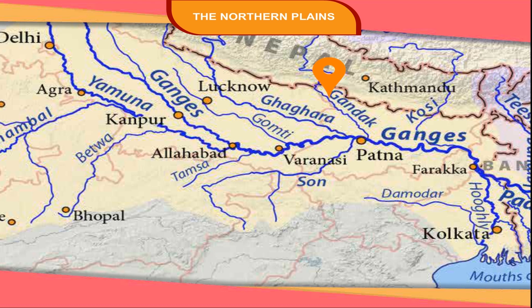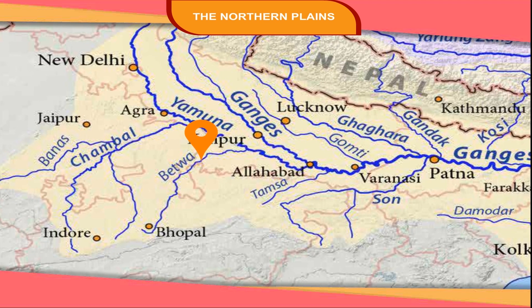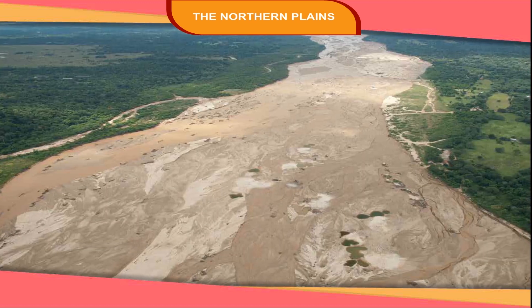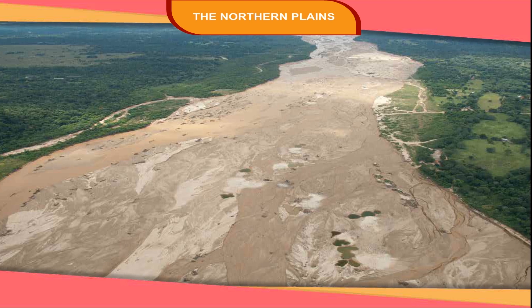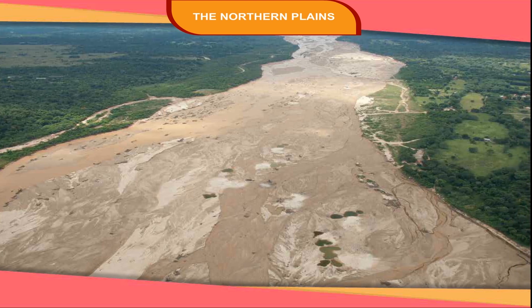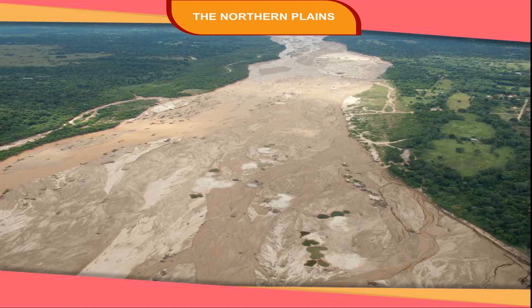The rivers Gandak, Gomti and Kosi also join the Ganga as it flows across the plains. The plateau rivers Chambal, Betwa and Son join the river Yamuna. A river carries lots of sediments with it and forms islands of sand at its mouth. These islands divide the river into many streams called distributaries.